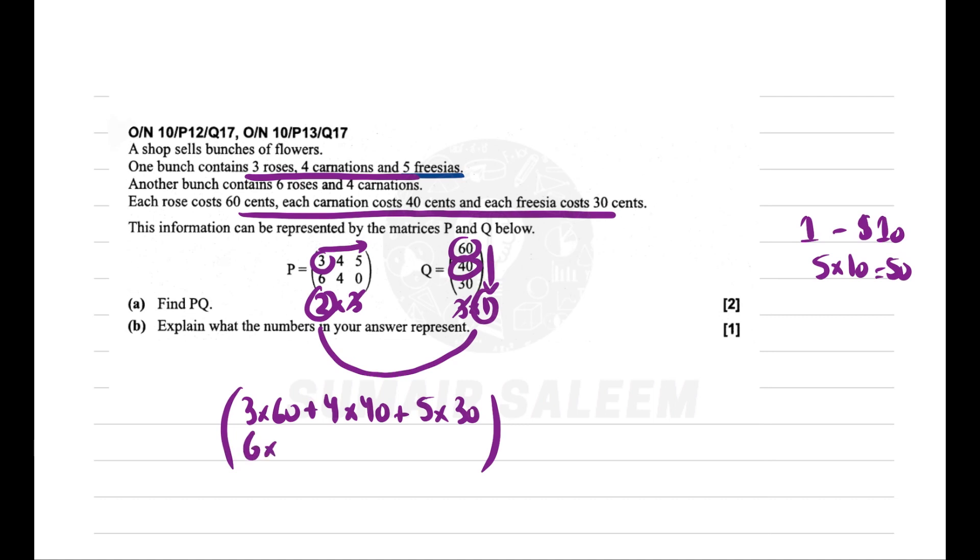Then the next one: 6 into 60 plus 4 into 40 plus 0 into 30. So my answer will be 490 and here it's going to be 520. Explain what the numbers represent. The numbers represent the selling price.